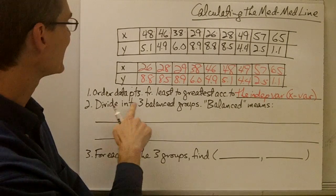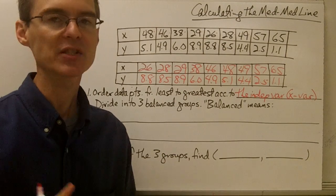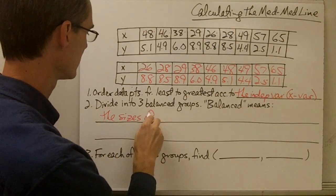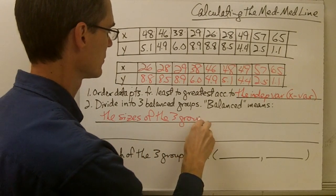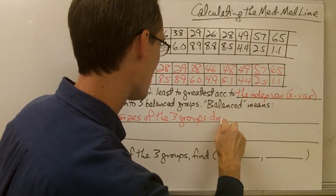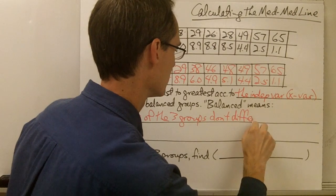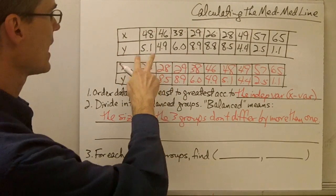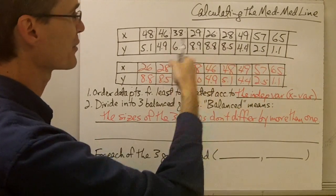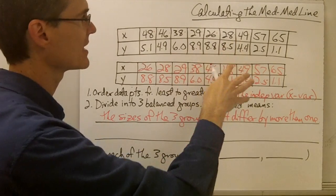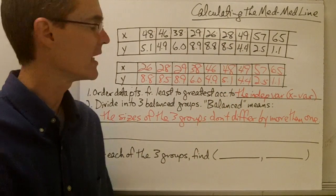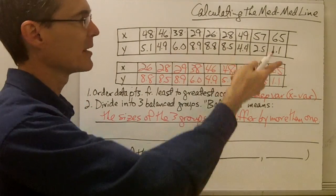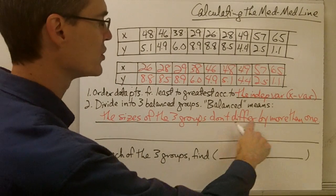Step two: I want to divide my data set into three balanced groups. Balanced actually means two things in this context. When we say balanced group, we mean the sizes of the three groups don't differ by more than one. In this case I've got nine points in my data set, so my balanced groups are each going to have three points in them. Anytime you've got a data set that's divisible by three, it's fairly straightforward — each one of your groups is going to have the same number of points.